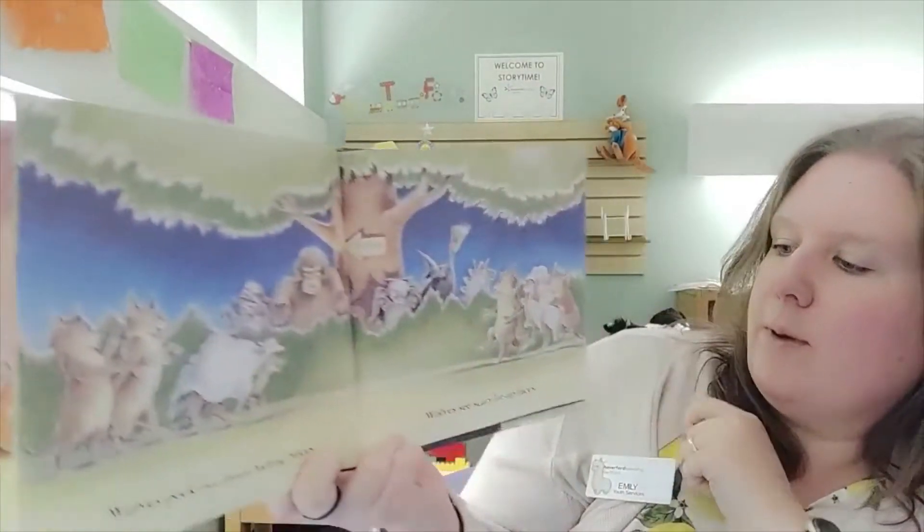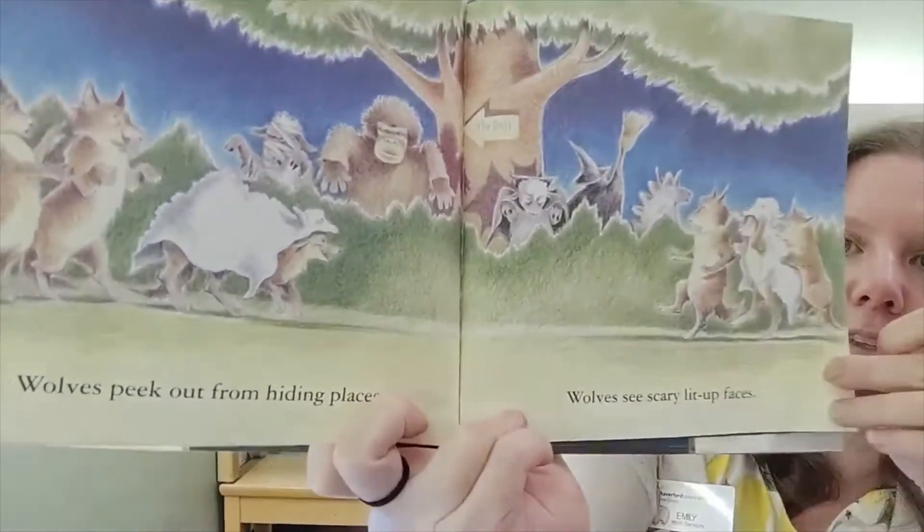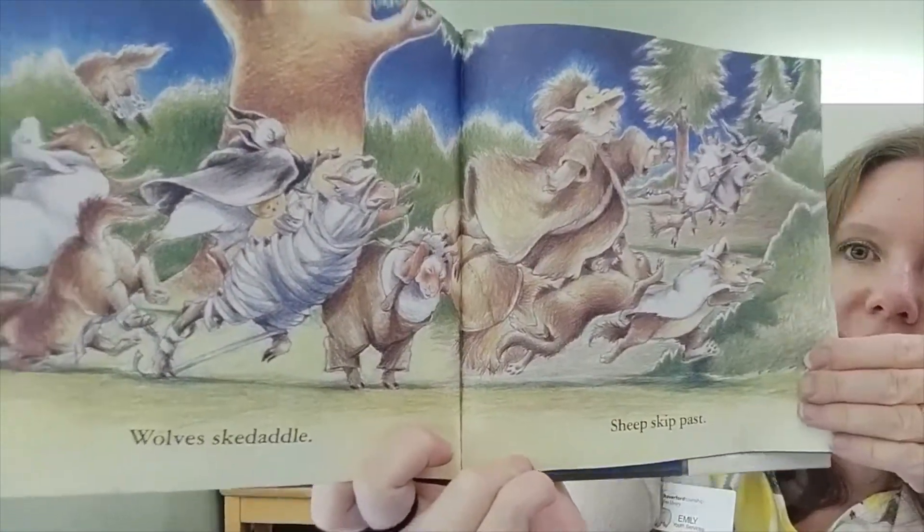Rustling noises come from trees. Is someone there or just a breeze? Wolves peek out from hiding places. Wolves see scary lit up faces. Wolves skedaddle. Sheep slip past.